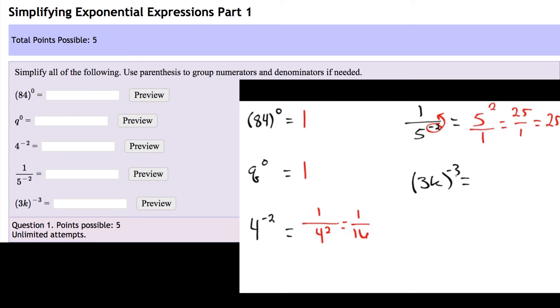And this last one, we have a negative exponent, and technically that means the negative exponent is going to go to both factors here. And because they both have negative exponents, they're also both going to go down to the denominator. So 3 to the power of 3 and k to the power of 3.